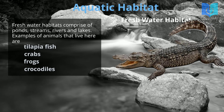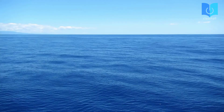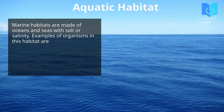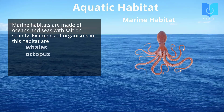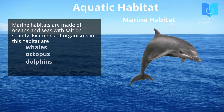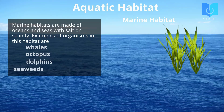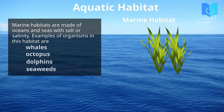Marine habitats are made up of oceans and seas with salt water, or salinity. Examples of organisms in this habitat are whales, octopus, dolphins, and weeds.